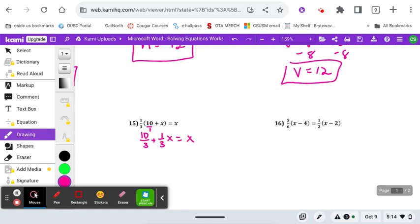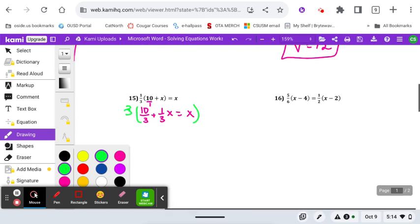Whenever we have all these denominators of one-third or even from the original step, we can multiply everything by three to get rid of that denominator. So it goes bye-bye here, bye-bye here.